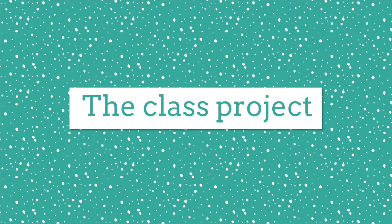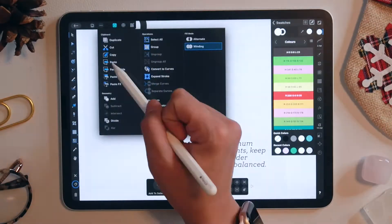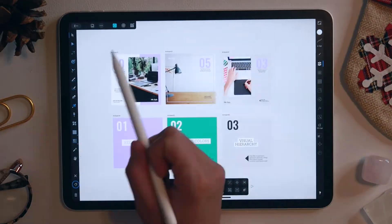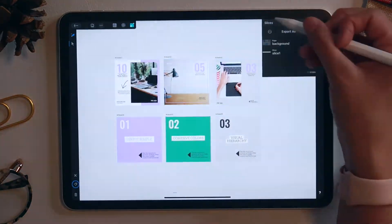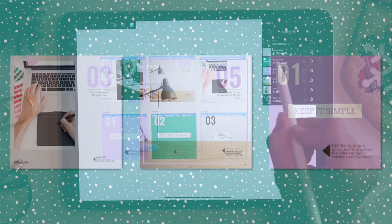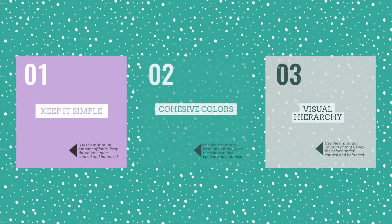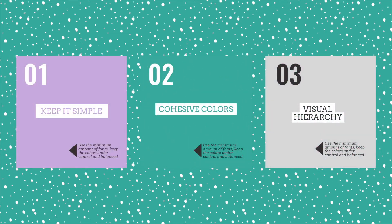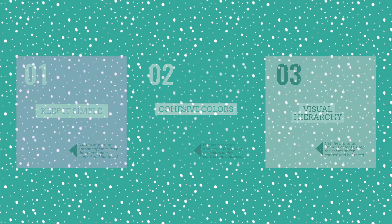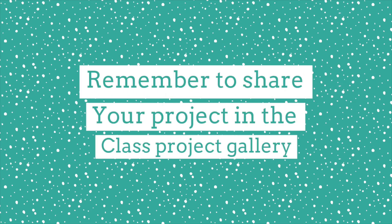For the class project, we're going to be creating a series of Instagram posts in Affinity Designer. We're going to create a set of three Instagram posts in square format that can be used as templates for future work. The posts are going to be broken down into the following format: the first post will include a basic post, the second will be a featured work post, and the third will be a three slide graphic that's kind of like an informational post relating to you or your work. When you're done with your posts, you can export them as JPEG files and load them to Instagram and share a screenshot of your profile as your class project for the course project gallery.